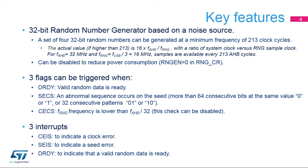The RNG performs a basic verification of randomness on the provided data. For example, if more than 64 consecutive bits have the same value — 0 or 1 — or there are more than 32 consecutive alternating 0s and 1s, a seed error current status flag is set.